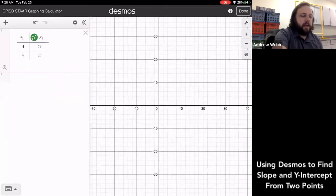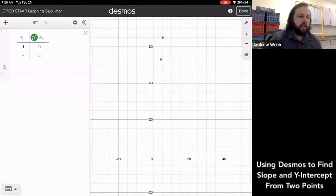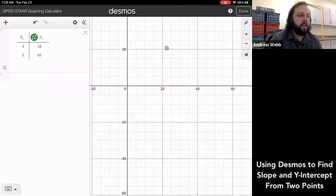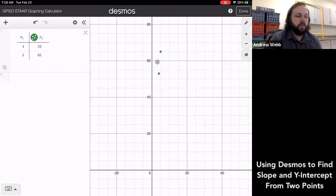And so now if I zoom out, I can find those points. I see already that I've got two points on my graph.